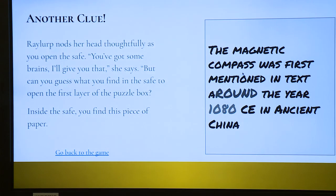It says the magnetic compass was first mentioned in text around the year 1080 CE in ancient China. Well, they've been learning how to round in math. So if we were to round 1,080, what would be the nearest 1,000? The nearest 1,000 would be 1,000. And there you go. That is the key to get out of the game, was the number 1,000. Phew. We did it. You did it. You got out.